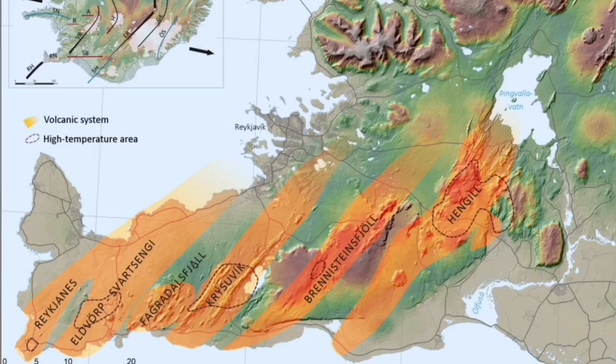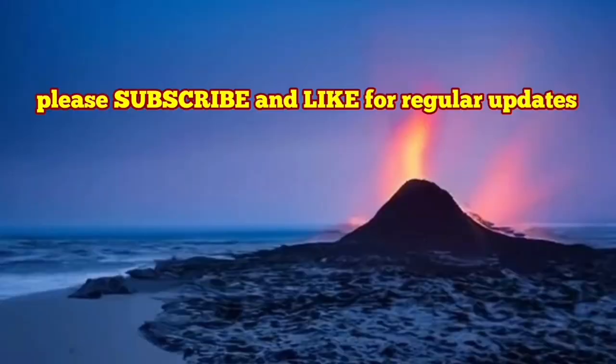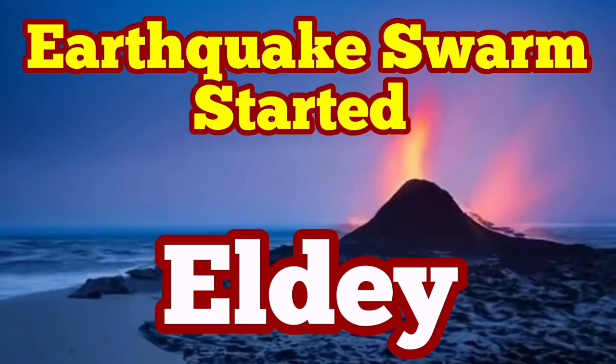Reykjanes is in the direction toward the left side, and Fagradalsfjall is almost at the center. To the right of it is another volcanic system, and to the left is the sourcing volcanic system. These are all connected and will be active one after another.